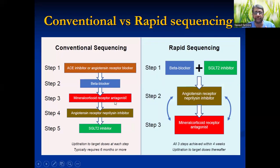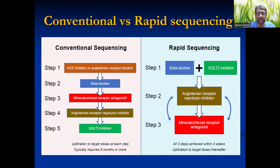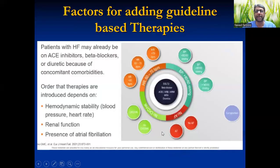There are various ways of sequencing. Previously it was ACE, then beta blocker, then MRA. Nowadays it is good to start with beta blocker, SGLT2, then angiotensin receptor-neprilysin inhibitor, then mineralocorticoid receptor antagonist — but it depends on the patient's characteristics. You can have various combinations based on hemodynamic status, renal status, and other comorbidities.